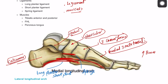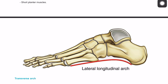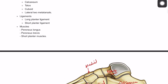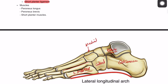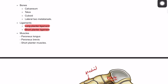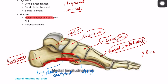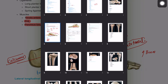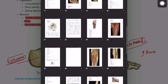The lateral longitudinal arch includes the calcaneum, talus, cuboid (the cuneiforms belong to the medial arch), and the lateral two metatarsals. Its ligaments are the long and short plantar ligaments, and muscles include peroneus longus, peroneus brevis, and short plantar muscles.